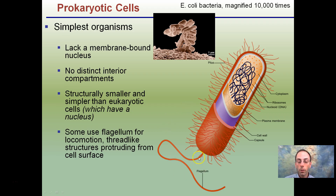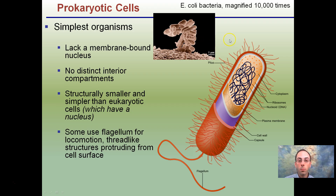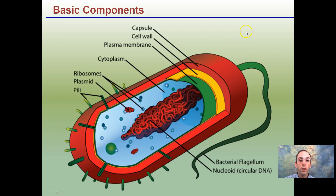The flagellum is used for movement and locomotion — thread-like structures protruding through the cell surface. E. coli bacteria is an example of a prokaryotic cell, magnified in this case 10,000 times, just to give you an idea of what they may look like.